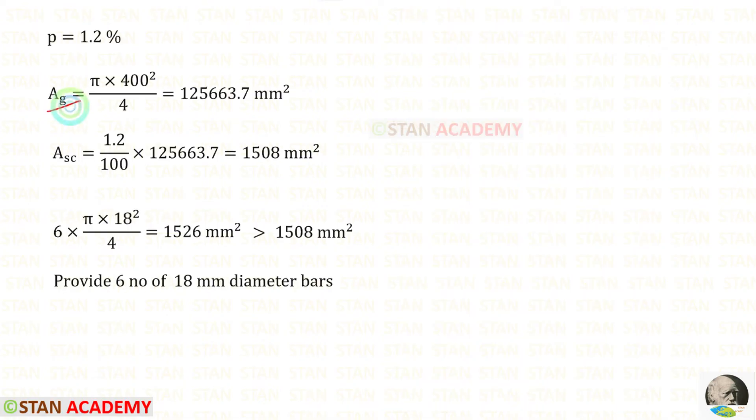Now let us find the gross area. We know that it is a circular section. The area formula is pi D square upon 4. So here the diameter is 400, for the gross area we will get this. Now let us find the area of the steel. We know the percentage of steel, 1.2. 1.2 upon 100 into gross area, we will get area of the steel.